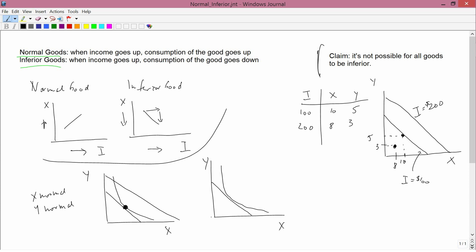An increase in income with X being normal means that the new position has to have more X. And an increase in income with Y being normal means the new position has to have more Y. And therefore, we need to be to the right of this line and above this line.